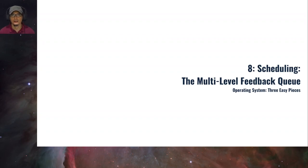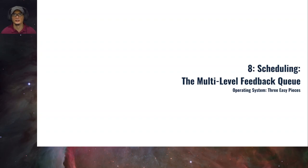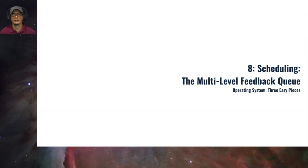Hello students, welcome to another lecture video for CommSci 125 Operating Systems. In this chapter we're going to take a look at the multilevel feedback queue policy. Before we continue, let's take a short review of what we discussed in the previous chapter. We discussed the basic ideas of scheduling policies — basically scheduling means deciding which user process will run on the CPU, and this decision is made by a component of the OS kernel which we call the scheduler.